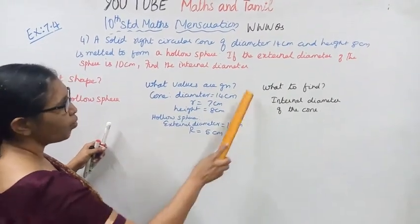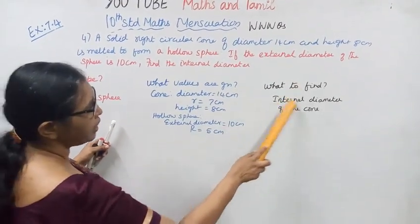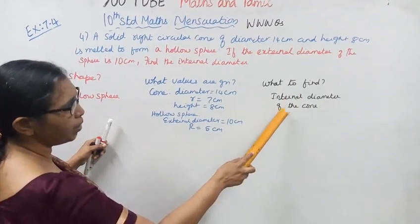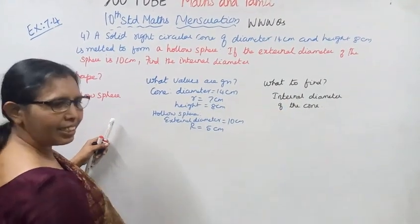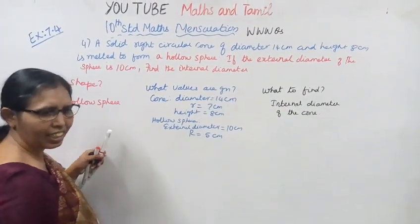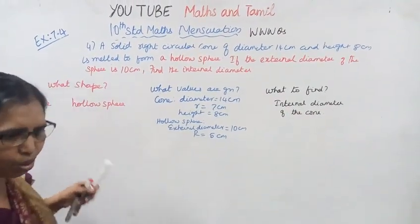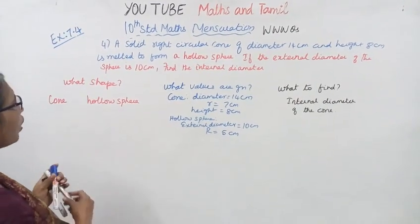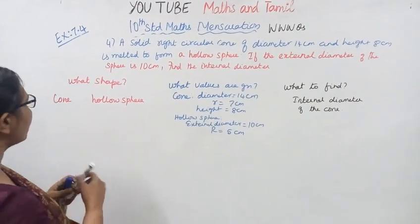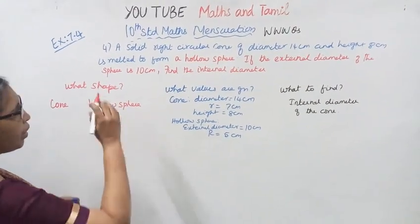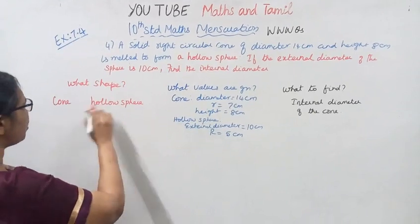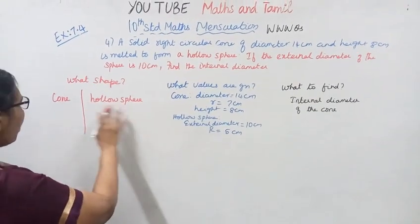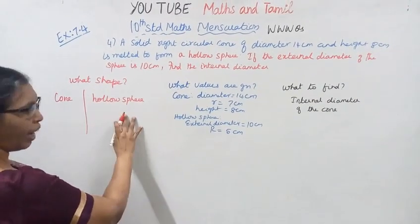What to find? Internal diameter, internal radius — small r. To find small r. These are the given values. You have to use 2 types of shapes and equate their volumes.